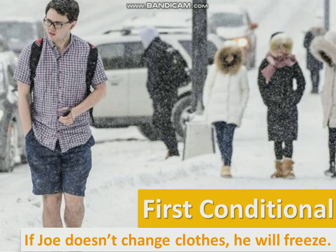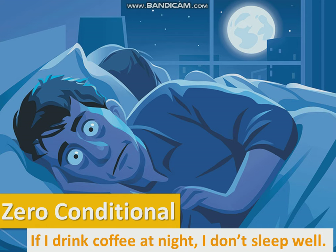We know this. If Joe doesn't change clothes, he will freeze. This is about something in the future — first conditional, future. Zero conditional is about things in general, not about the future. For example, if I drink coffee at night, I don't sleep well. This is always true, not the future — things in general, the zero conditional.